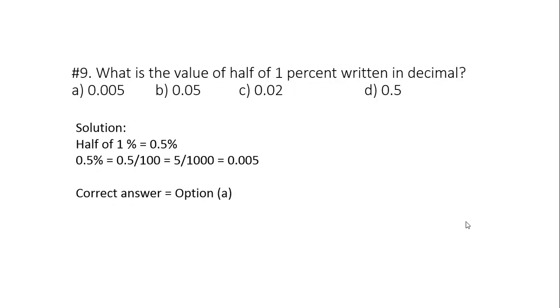Question 9: What is the value of half of one percent written in decimal? Half of one percent is 0.5 percent, and 0.5 percent means 0.5 divided by 100. Removing the fraction from the numerator, it can be written as 5 divided by 1000, which is nothing but 0.005. So the correct answer is option A.